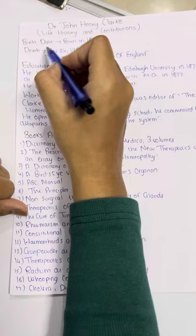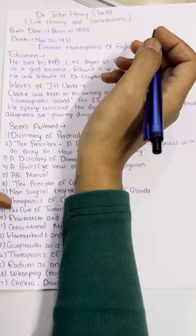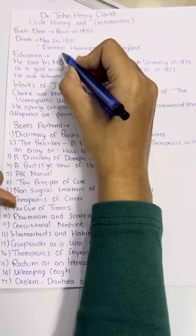John Henry Clark was born in the year 1853, and his death date is November 24, 1931. John Henry Clark is one of the eminent homeopaths of England and was a very staunch practitioner there.